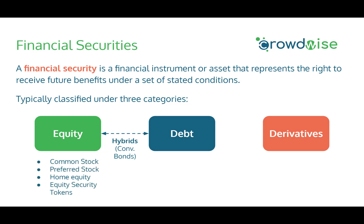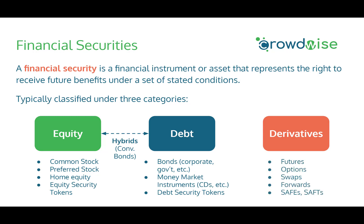Some examples of equity include common stock, preferred stock, home equity, and security tokens that are equity. Different types of debt may include bonds such as corporate or government, money market instruments, and debt security tokens. And lastly, derivatives include things such as futures, options, swaps, and forwards, or in the private markets, things like SAFEs and SAFTs that we'll get into next.